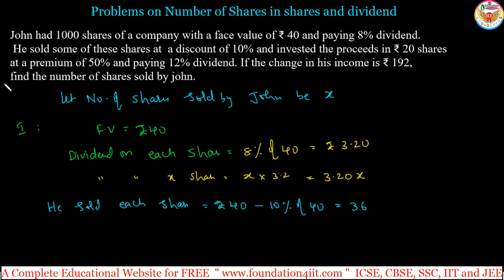In second case, 36 is shares and number of shares is X. Each share is sold for 36, number of shares are X. Sum invested in case 2, the sum invested, this is the proceeds to the next level. Sum invested is 36 into X. In the second case.